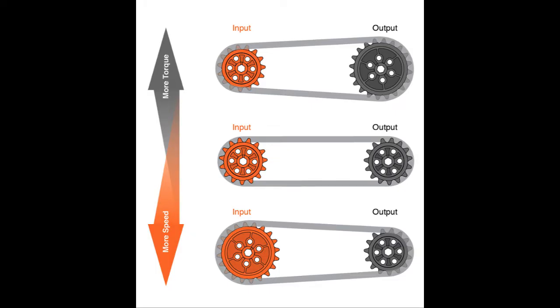Flip it to a bigger input sprocket connected to a smaller output sprocket and speed is increased while torque is decreased.